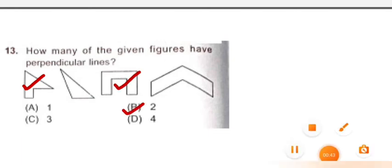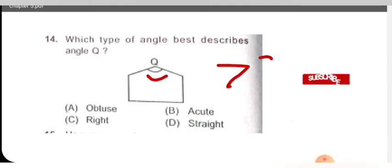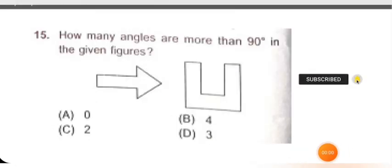Next question: which type of angle best describes angle Q? You can observe that this angle is greater than 90 degree. If it is greater than 90 degree, it means this is obtuse angle. Option A is correct for this.